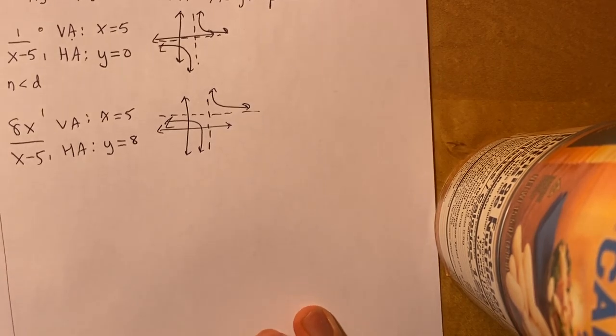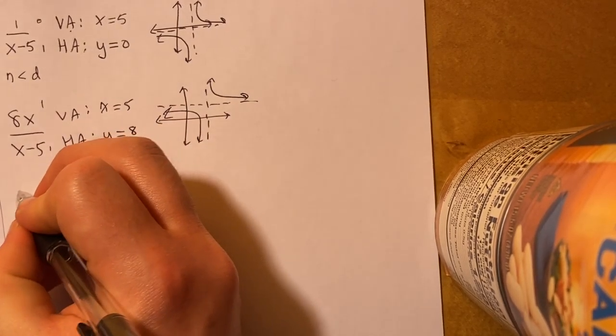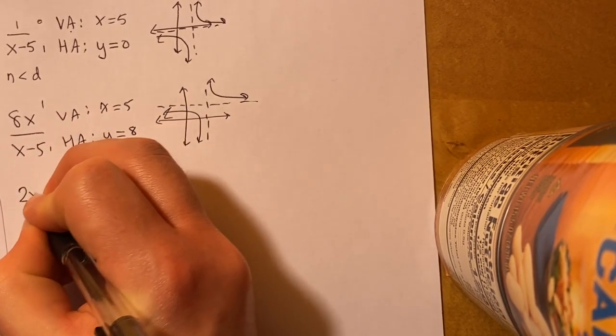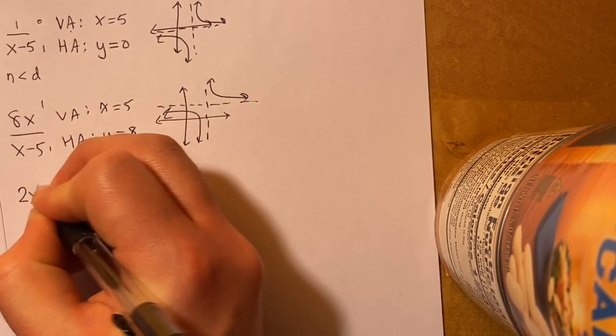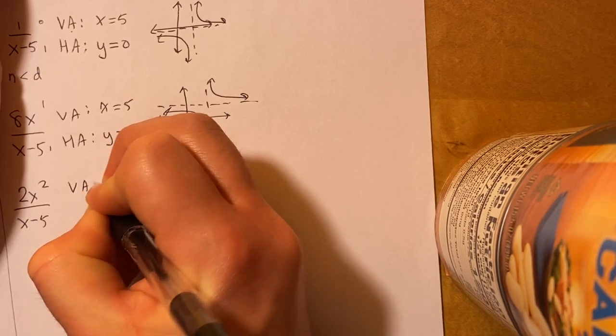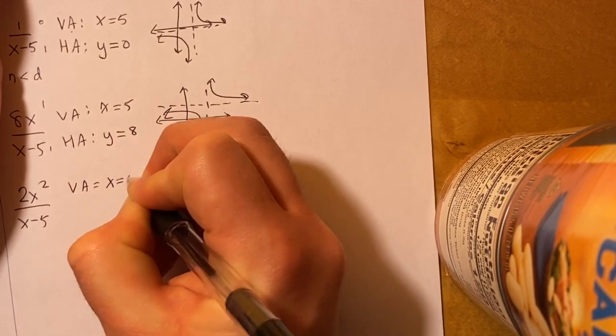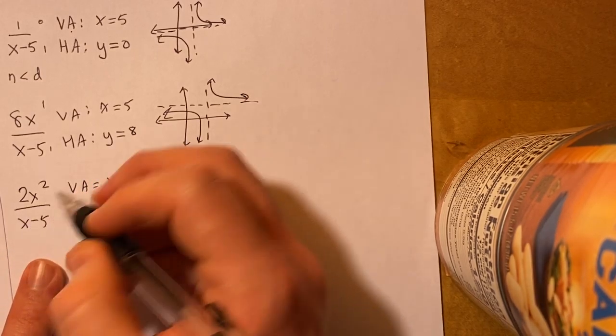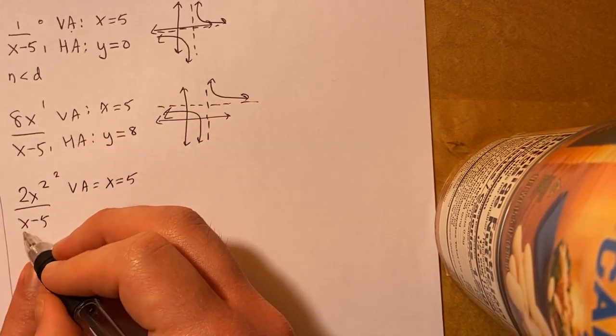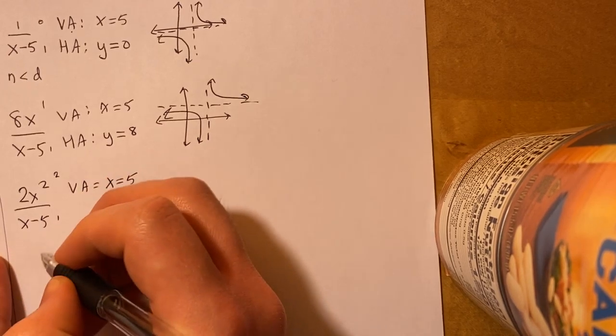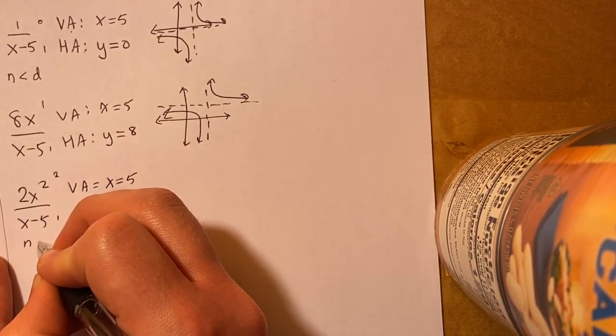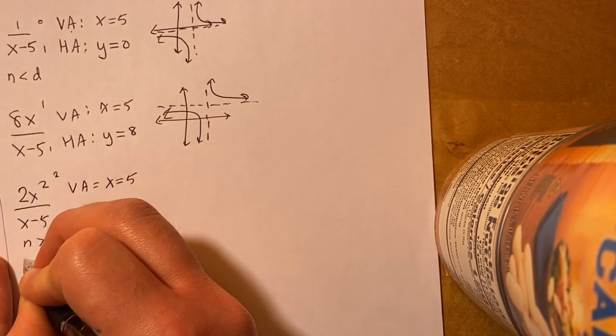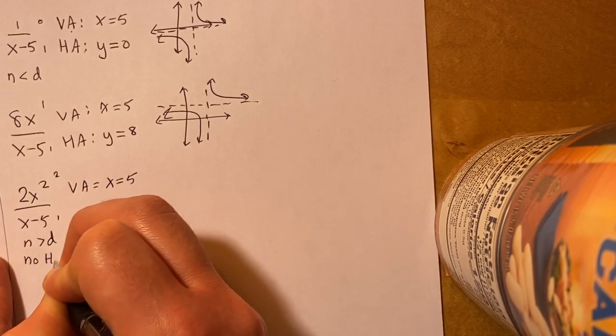Okay, now we're going to do another graph. We're going to do 2x squared over x minus 5. Our vertical asymptote is the same, x equals 5. And we know, looking at the degree, that the 2x squared, the degree is 2, and x minus 5, the degree is 1. The numerator is greater than the denominator, so we learn that's no horizontal asymptote.